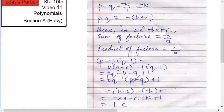Now we know both the things. pq is what? Minus of k plus c. And p plus q is minus k. So put it: minus of (k plus c) minus minus k plus one.